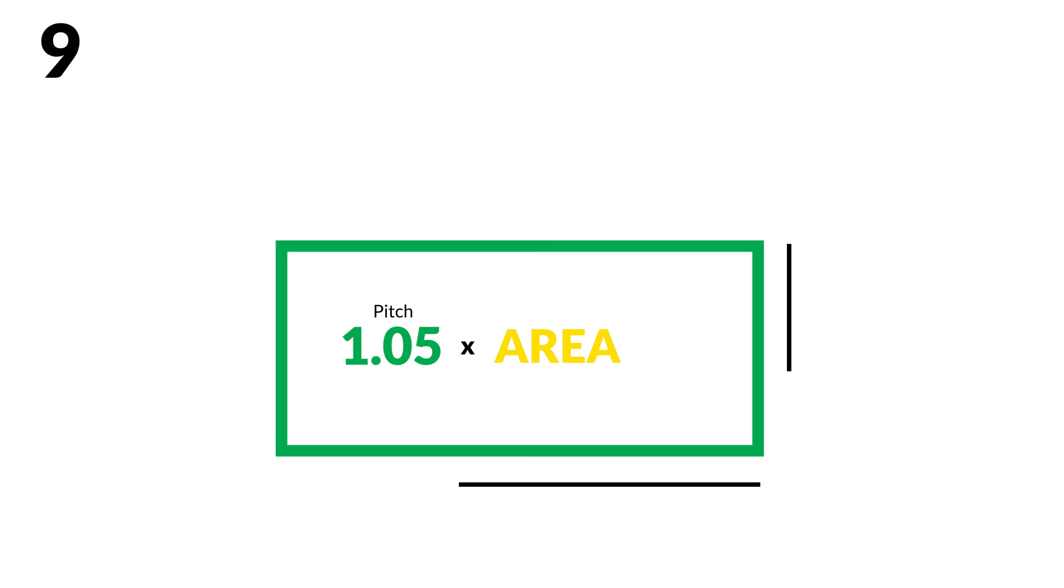Number 9: To allow for hips, ridges, and waste, add 10% of your final number for a gable roof, and 17% of your final number for a cottage roof.